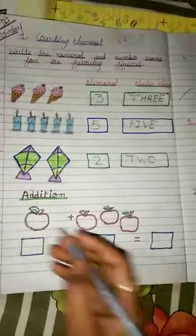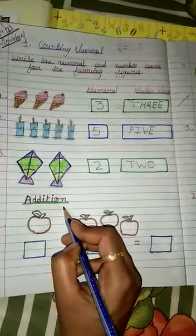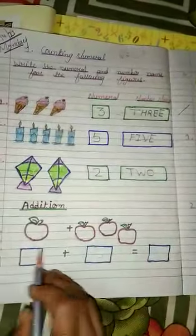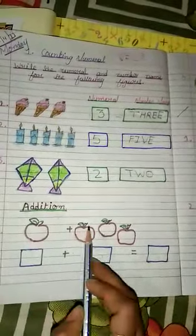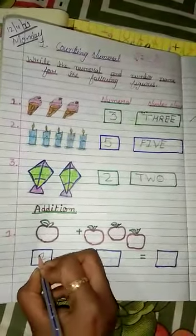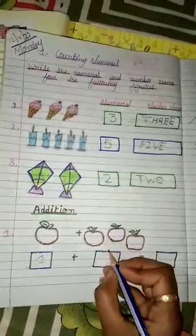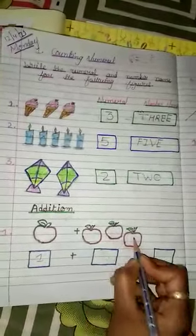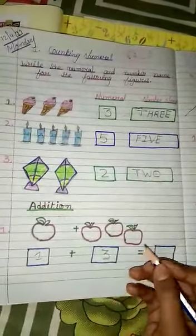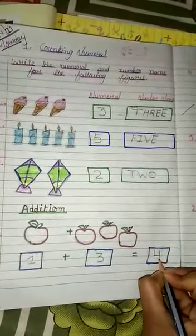Now, our next topic is addition. How many apples are there? First, we count. 1, 2, 3, 4. So here is 1 apple. We write 1. And here is 3 apple. 1, 2, 3. So we write 3. 1 plus 3 equal to what? 1 plus 3 equal to 4.